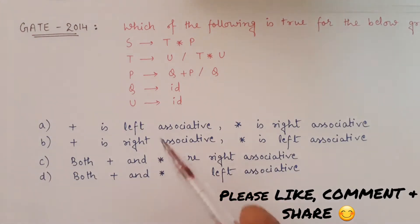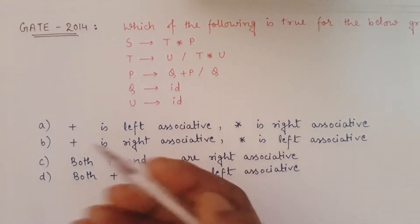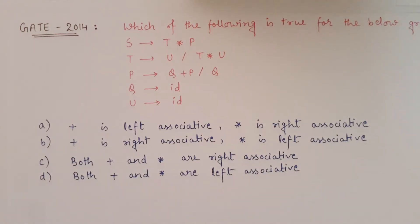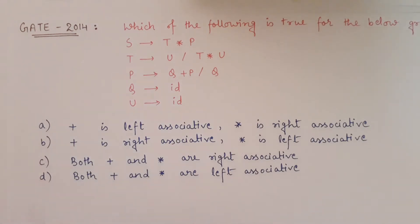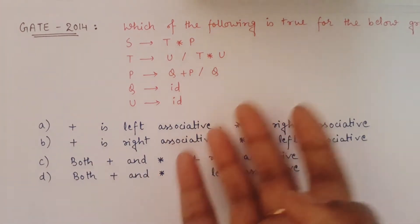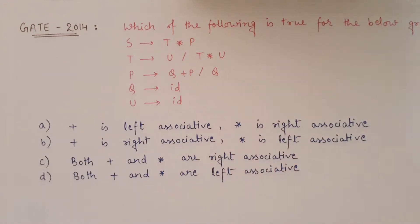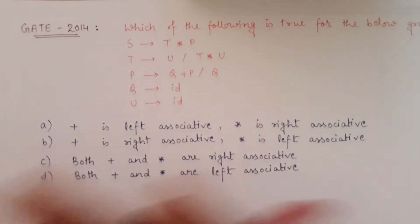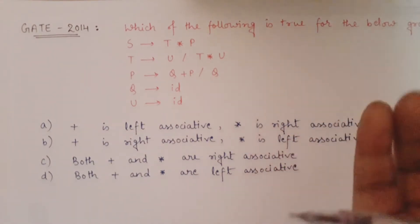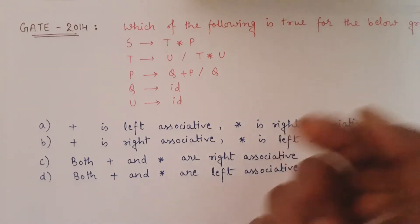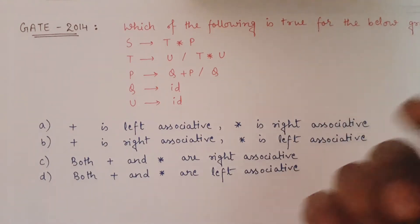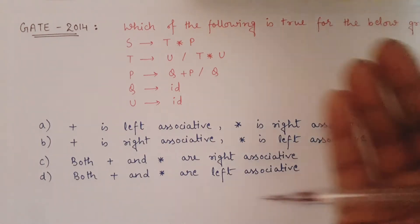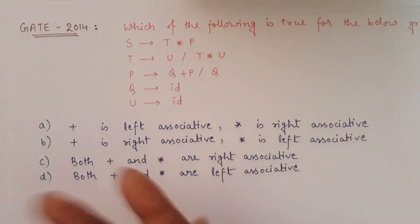So what they want us to do is find the associativity of plus and star in the given grammar. I hope you know what associativity and precedence are. If not, I will try to explain in this video. If you still face difficulty, we have covered this in detail in the compiler design playlist — there is a dedicated video where everything is explained clearly. I recommend going to that playlist to learn compiler design from scratch; I will give the link in the I button.